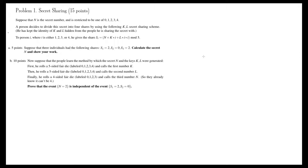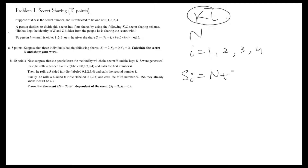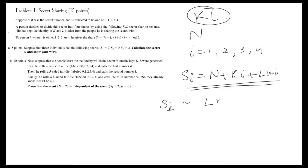Question one on the midterm was about secret sharing. A person decides to divide a secret into four shares using numbers k and l. His secret is n, and the share for person i is s_i = n + k*i + l*i². So you have a degree-2 polynomial: p(x) = lx² + kx + n. This should give you the insight as to how to proceed with this problem.